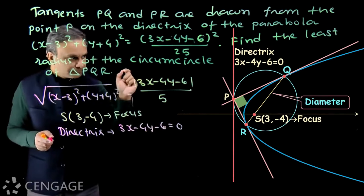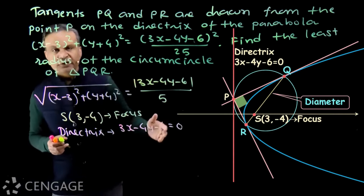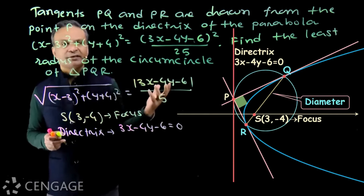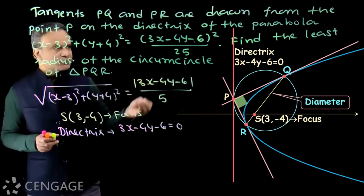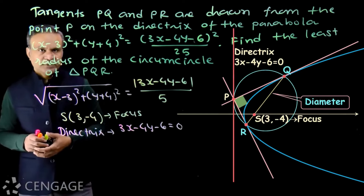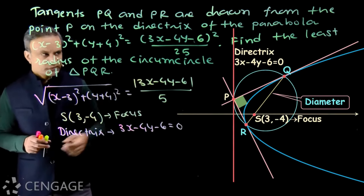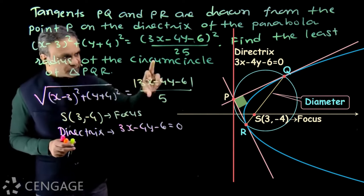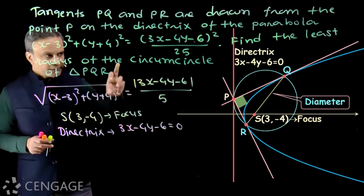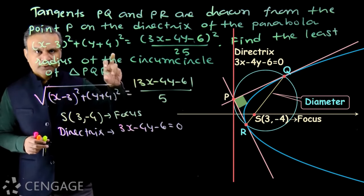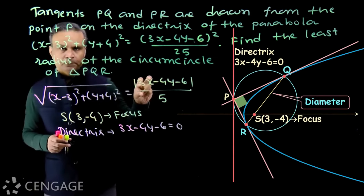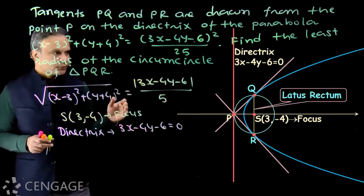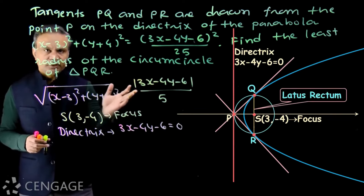We have to find the least radius of the circumcircle. Point P is variable — it is moving on the directrix — so tangents PQ and PR are variable. Triangle PQR is variable and hence its circumcircle is variable. Since QR is the diameter (because angle QPR is 90°), we need the least value of QR. Since QR is a focal chord, what is the minimum length of QR? The minimum length will be the length of the latus rectum, when QR is perpendicular to the axis of the parabola.